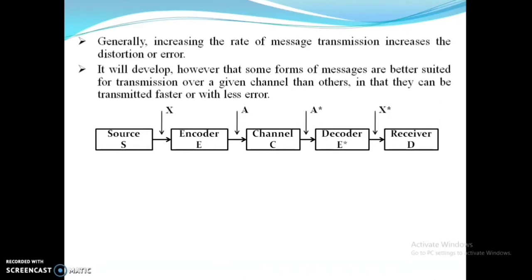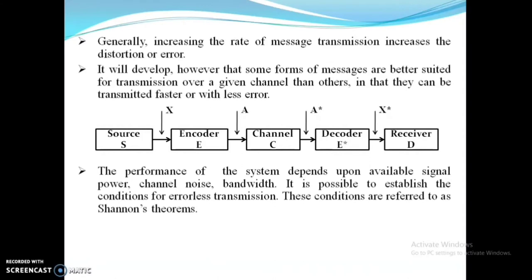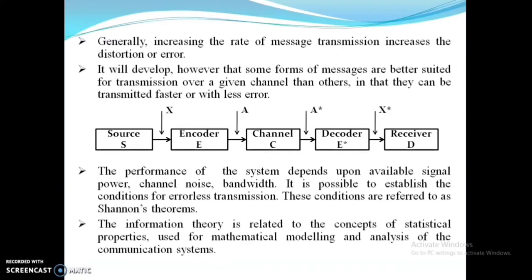Hence, by introducing the encoder and decoder, we can transmit the message faster or with less error. Generally, the performance of the system depends on three parameters: available signal power, channel noise, and bandwidth. Based on these parameters, it is possible to establish the conditions for reliable transmission, referred to as Shannon's theory. The information theory is related to concepts of statistical properties, noise interference, channels, and is used for mathematical modeling and analysis of communication systems.